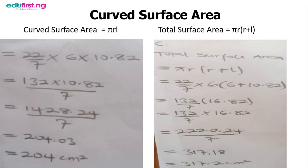The next thing is to calculate the total surface area. I already know my formula to be πr(r+l). My π is 22/7 times r, which is 6, open bracket, my r again is 6 plus l which I calculated as 10.82, close bracket.